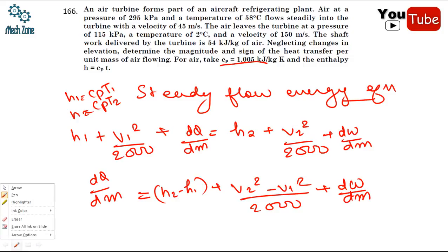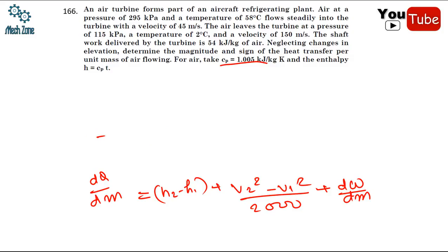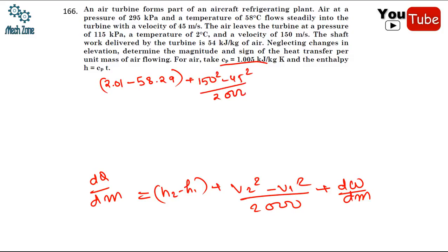Rearranging, dq/dm = (h2 - h1) + (V2² - V1²)/2000 + dW/dm. We simply have to solve this equation using the given values. Substituting: Cp·T2 gives 2.01, h1 is 58.29, and (150² - 45²)/2000 plus 54. Solving, this comes out to be +7.9575 kilojoules per kg.